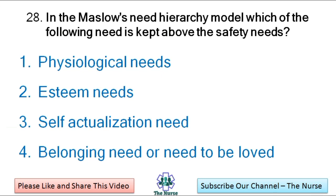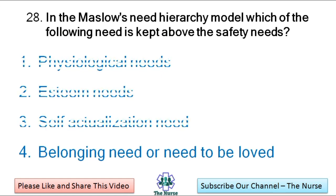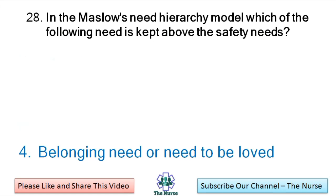In Maslow's Hierarchy of Needs model, which of the following needs is kept above the safety needs? Physiological needs, esteem needs, self-actualization need, belonging need or need to be loved. Correct answer: Belonging need or need to be loved.